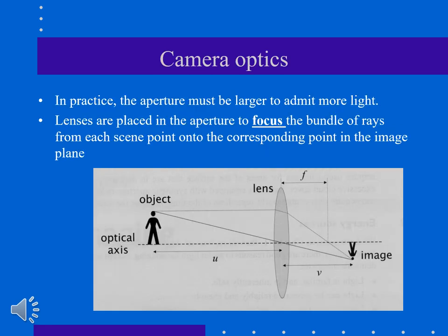Now the location of each point in x and y can be calculated using the focal length. In practice, the aperture is the opening that allows light to go through into a camera or to be projected on the other side. The aperture must be larger to admit more light.